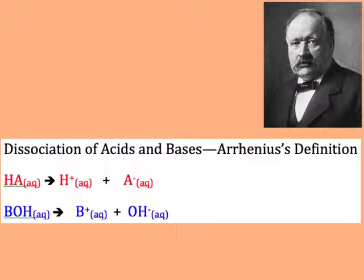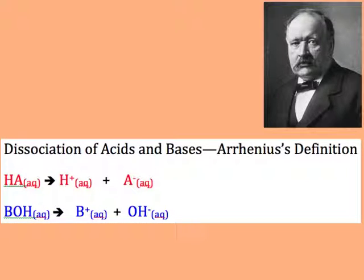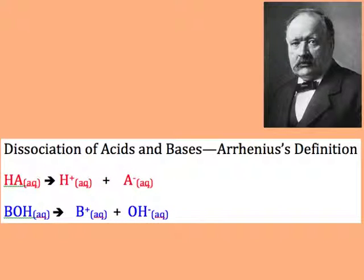Arrhenius came up with the very first, most simplistic definition of acids and bases. His definition basically states that an acid is a substance that dissociates in water to produce H+ ions. So any substance that, when dissolved in water, produces H+ ions is technically an Arrhenius acid.